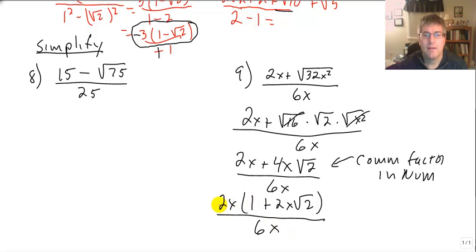And now I have common factors that I can simplify. 2 over 6 is 3. My x's cancel. My final answer is 1 plus 2x squared of 2 all over 3.